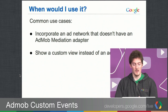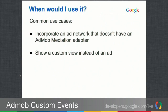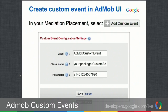So why would you use it? If you want to incorporate an ad network that doesn't have an AdMob Mediation Adapter, you could write your own custom event to serve that network. You could also show some custom view instead of an ad. Let's walk through how you can set up this custom event and write your own code to serve this custom view.